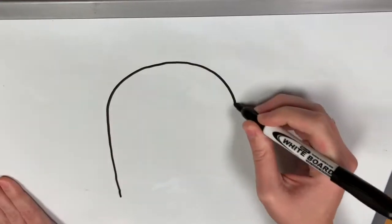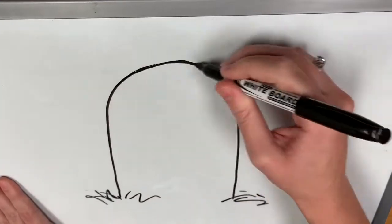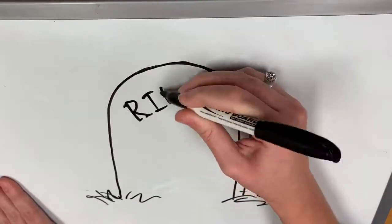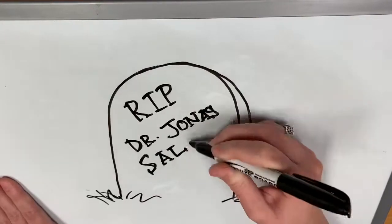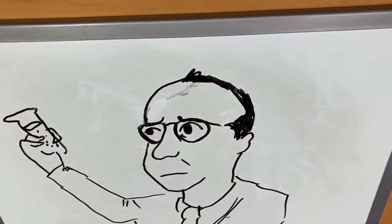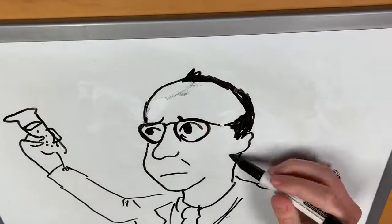Salk spent his last years searching for a vaccine against AIDS. He died on June 23, 1995 at the age of 80 in La Jolla, California. He is survived by his famous quote: hope lies in dreams, in imagination, and in the courage of those who dare to make dreams into reality.